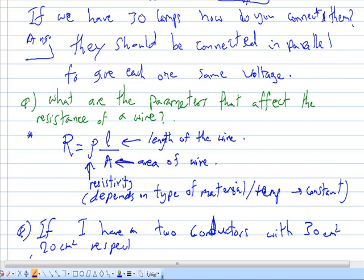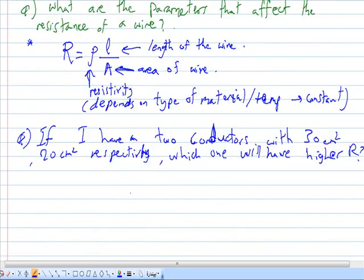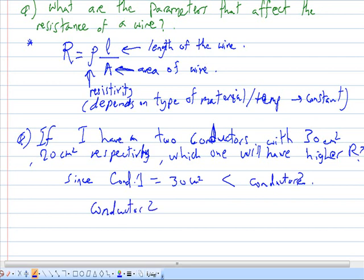which will have higher resistance? Since conductor 1 is equal to 30 centimeters square and it is less than conductor 2, conductor 2 has higher resistance.